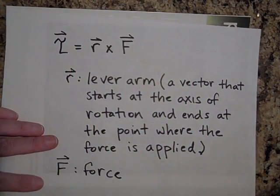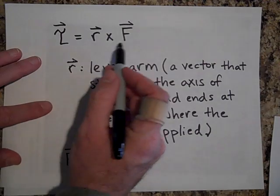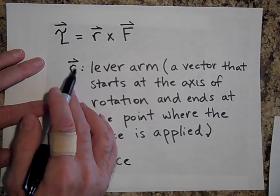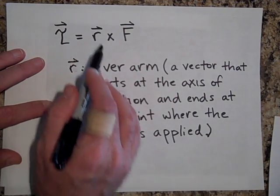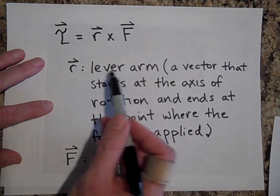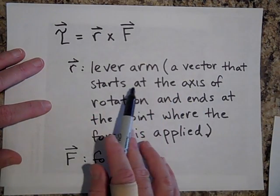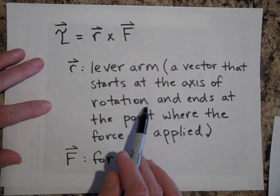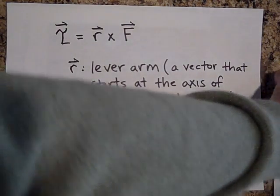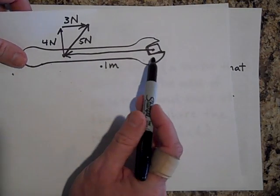Now to reiterate what torque is all about, torque is going to be R cross F and R is called the lever arm. And it's a vector quantity, a vector that starts at the axis of rotation.